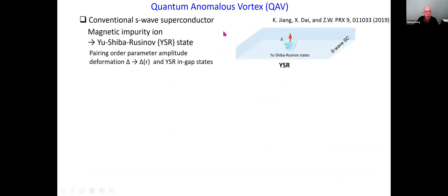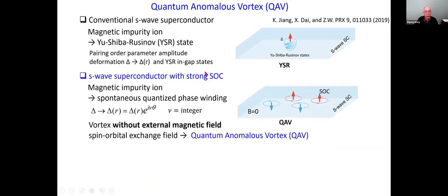So what is a quantum anomalous vortex? If we put a magnetic impurity in a superconductor, the breaking of time reversal symmetry will cause the Yu-Shiba-Rusinov states to appear. However, these are not vortices, and to have a vortex in a type-II superconductor you need an external magnetic field. What we found is this conventional folklore changes fundamentally in an S-wave superconductor with strong spin-orbit coupling: if you put a magnetic impurity in the superconductor, there will be a spontaneous quantized phase winding in the superconducting order parameter — a spontaneous vortex of the supercurrent without applying an external magnetic field. The role of the magnetic field is played by the spin-orbital exchange field, and we call such vortices quantum anomalous vortices.